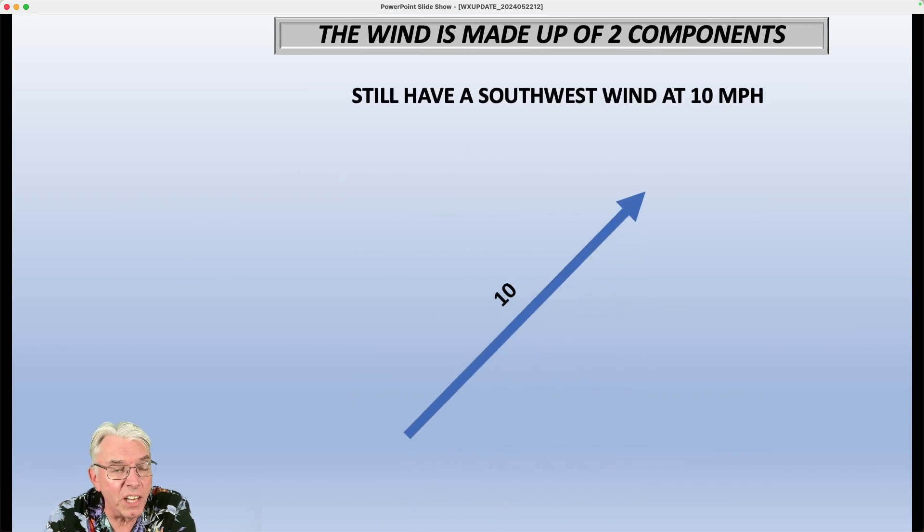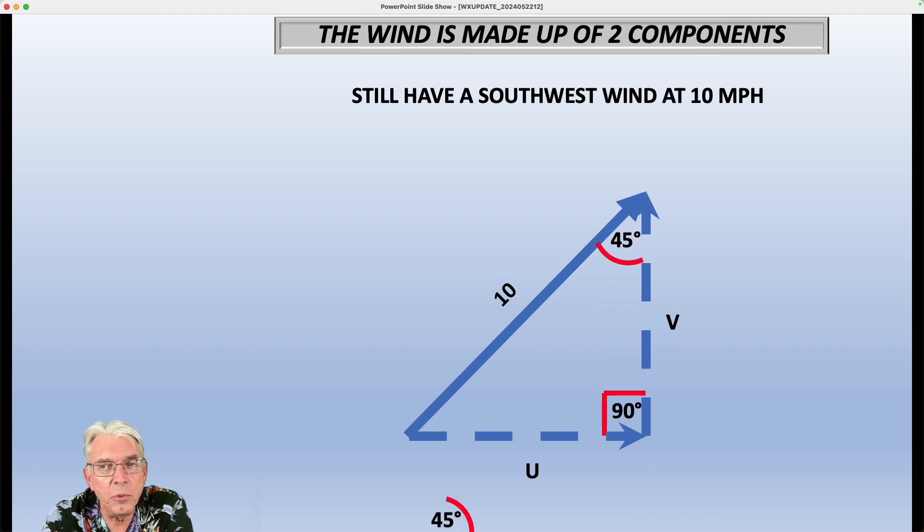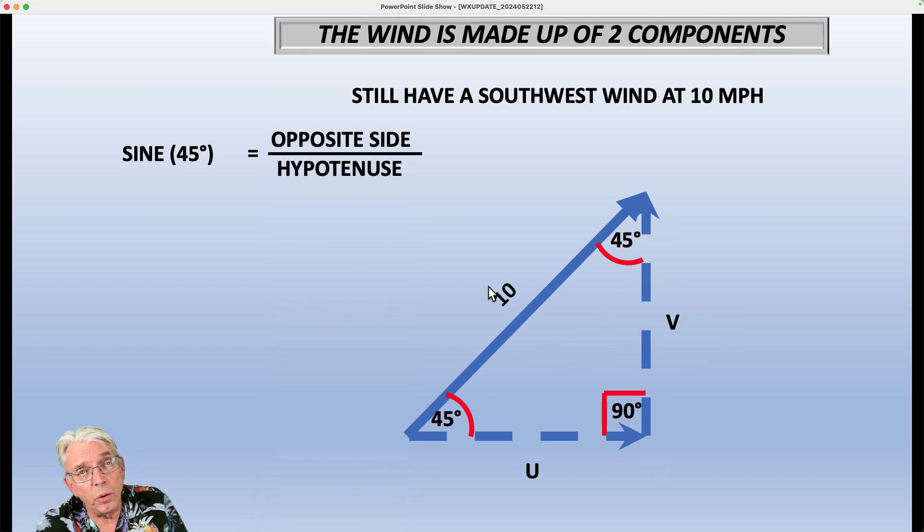Now, we still have a southwest wind at 10 and we've still got our U component. Now we're going to take a look at the V component of the wind. We've still got our right angle, 90 degrees, the two 45s. Now, the sine of an angle is defined as the ratio of the opposite side from this angle. So that's the V component is the opposite side, the ratio of that to the hypotenuse. So that means the sine of 45 degrees is the opposite side ratio to the hypotenuse or V over 10.